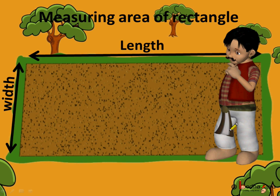Now, Mehnat Ram wanted to find the area of this land. What is the shape of this land? It is a rectangle — like a notebook, matchbox, etc. The longer sides are called the length and the shorter side is called width.